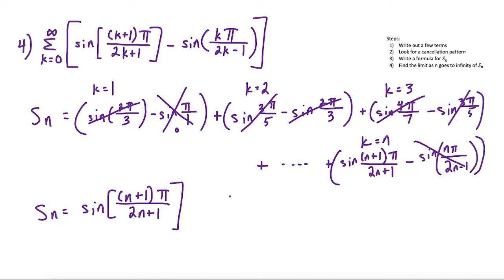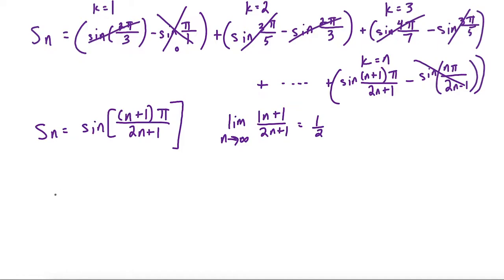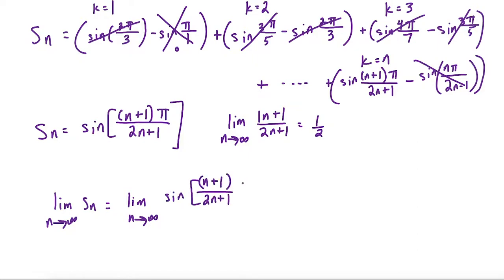The limit as n goes to infinity of (n+1) over (2n+1) equals 1/2, because we have a rational function where the leading coefficients give us that ratio. So the limit of s(n) is sine of (1/2)·π = sine of π/2, which equals 1. This is our solution to the last question: the sum of the series equals 1.